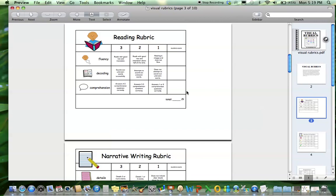First up is a reading one, so this would be for reading a book. Students are scored based on fluency, decoding, and comprehension, and then putting the score in the bottom and seeing the total out of nine.